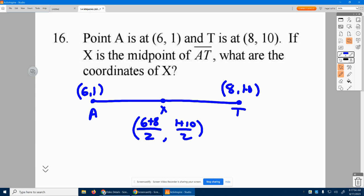6 plus 8, 14. 14 divided by 2, 7. That gives me 11 divided by 2, which is 5 and a half. We'll just write it as 5.5. And that is where X must be located.